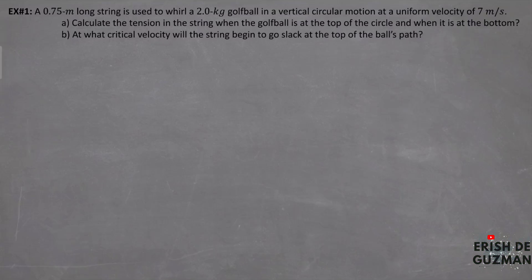A 0.75-meter long string is used to roll a 2-kilogram golf ball in vertical circular motion at a uniform velocity of 7 meters per second. Letter A: calculate the tension in the string when the golf ball is at the top and at the bottom of the circle. For letter A, calculating the tension when the golf ball is at the top using the equation: tension equals centripetal force minus weight.